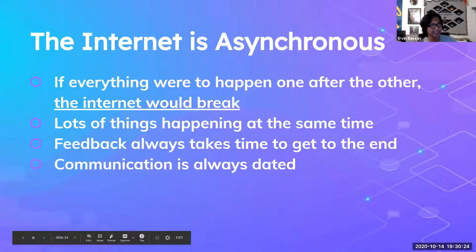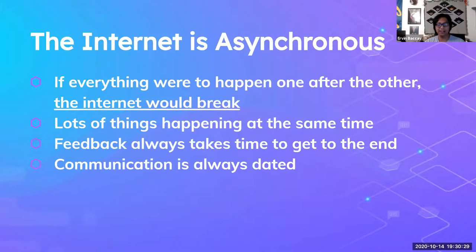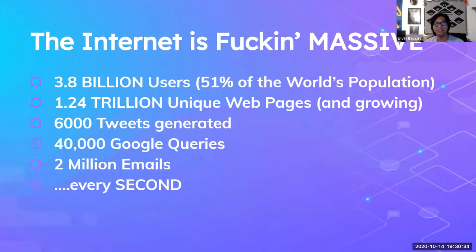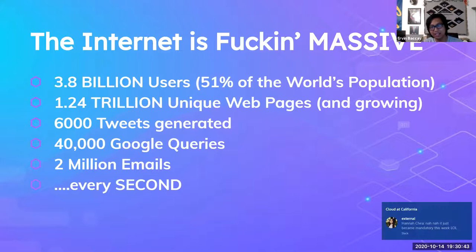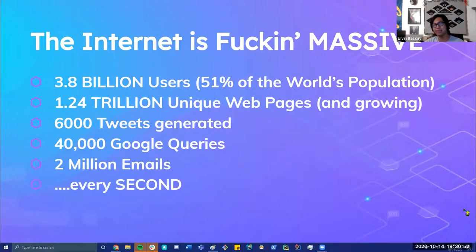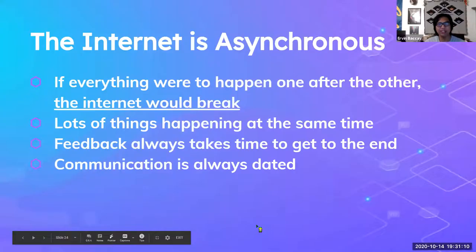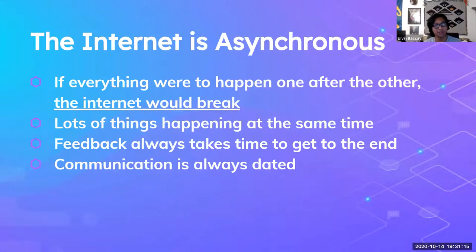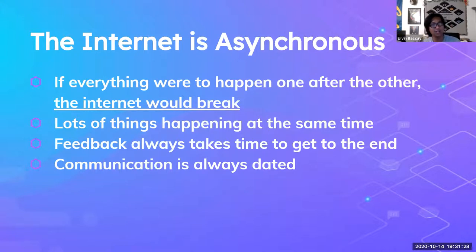The internet is asynchronous. If everything happened one after the other, the internet would break. If 6,000 tweets are generated every second and we process them one after another, even if each tweet takes one one-thousandth of a second to process, it takes one whole second just for tweets. Consider 40,000 Google queries or 2 million emails processed in order — the internet could not handle that. Everything needs to happen in parallel. Also, lots of things happen simultaneously: sending tweets, emails, medical data, receiving data — and feedback always takes time to arrive.